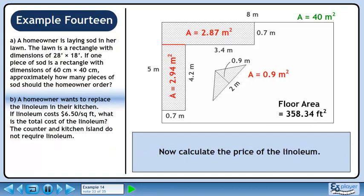Now we'll calculate the price of the linoleum. Multiply the floor area, 358.34 square feet, by the cost of the linoleum, $6.50 per square foot.